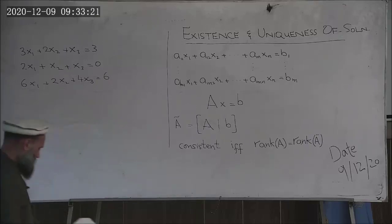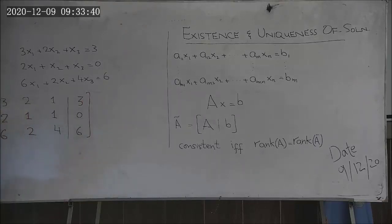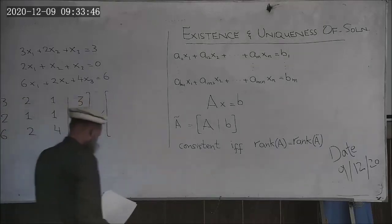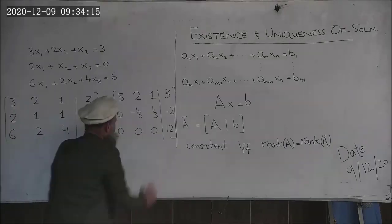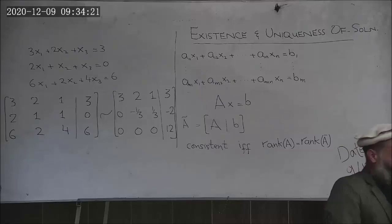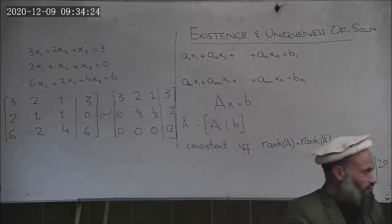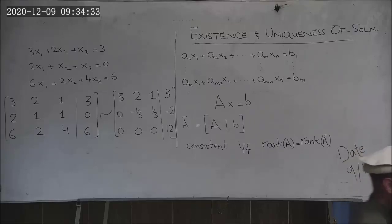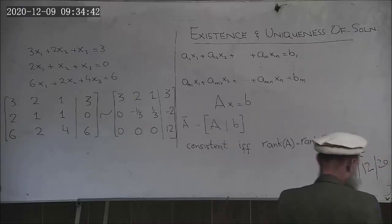Recall the example we had taken: we constructed an augmented matrix, then by elementary row operations transformed it into echelon form. From that echelon form, the rank of the augmented matrix is 3, while the rank of matrix A is 2. Since the ranks are not the same, the system of equations is inconsistent — no solution exists.